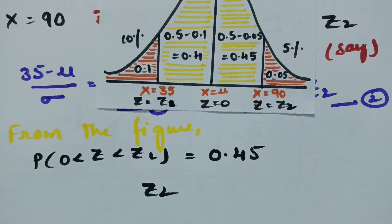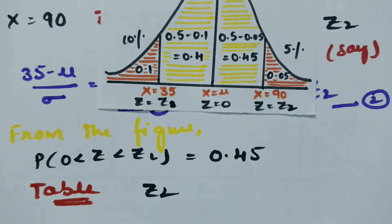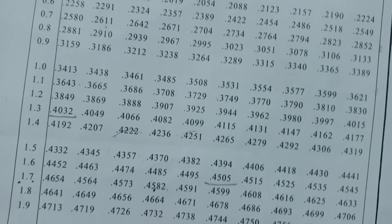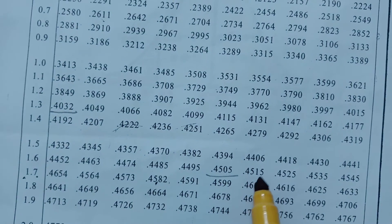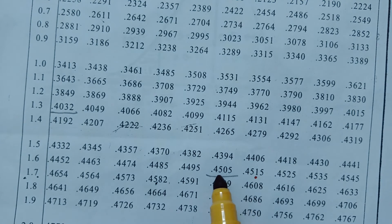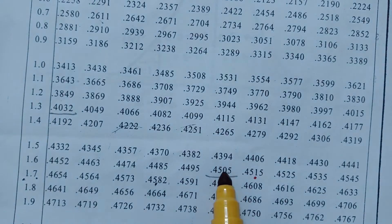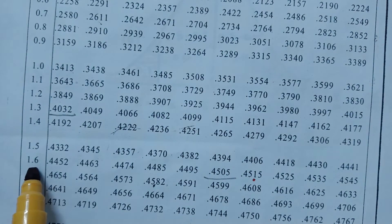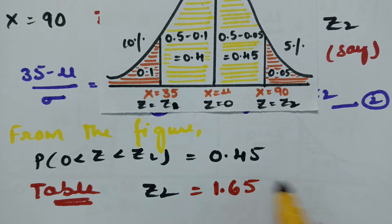From the z-table, we need to find z2 for the area 0.45. Looking at the table, 0.45 is nearest to 0.4505 with a difference of 0.0005, which is the minimum difference. This corresponds to the row 1.6 under column 5, giving z2 equals 1.65.